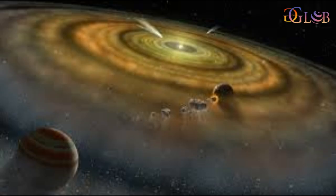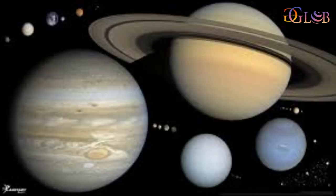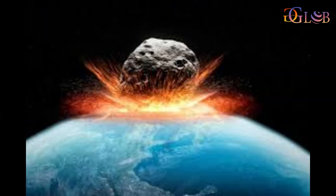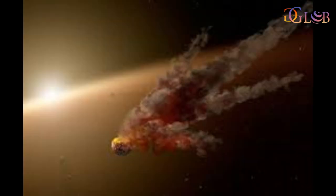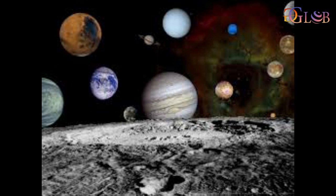Two theories describe how over the course of millions of years the inner rocky planets formed from original building material. According to the older theory, the dust in the inner solar system accumulated to ever larger chunks, gradually reaching approximately the size of our moon. Collisions of these planetary embryos finally produced the inner planets: Mercury, Venus, Earth, and Mars.